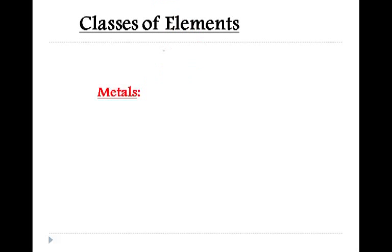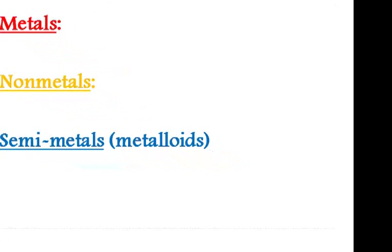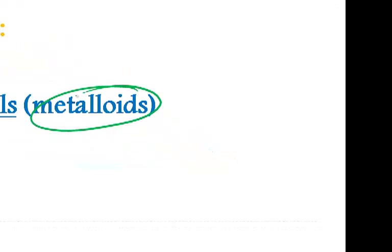Now we have some different classes of elements on the periodic table. The first class is the metals. We also have the non-metals and the semi-metals or the metalloids. I would remember that term particularly.